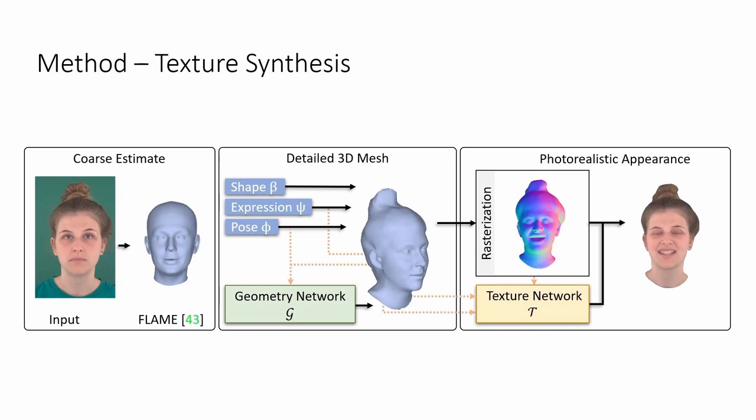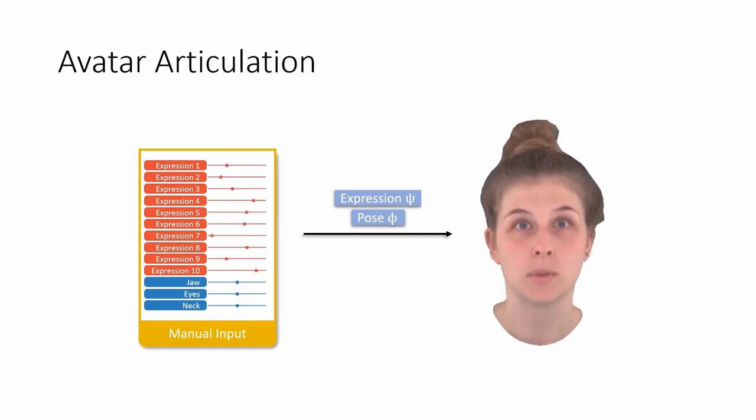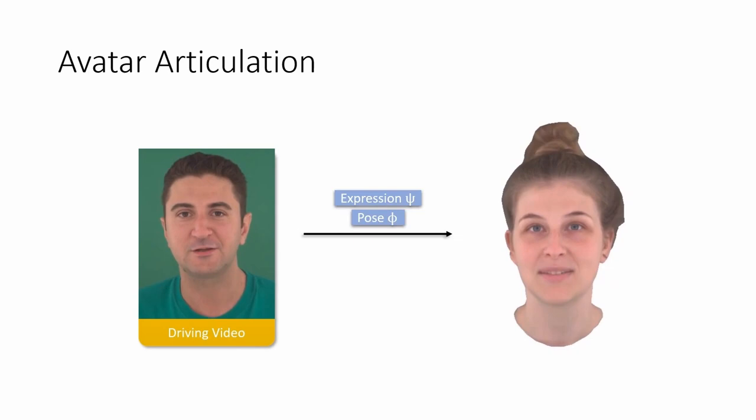The resulting avatar is controlled via pose and expression parameters psi and phi of the morphable head mesh. A driving sequence may also be used to extract the controlling parameters.